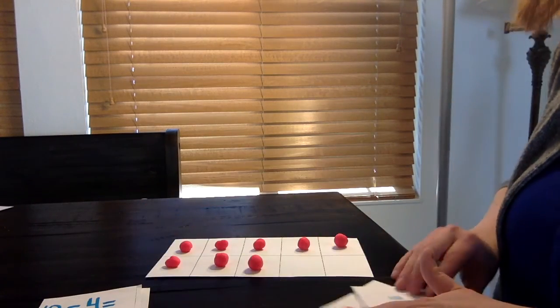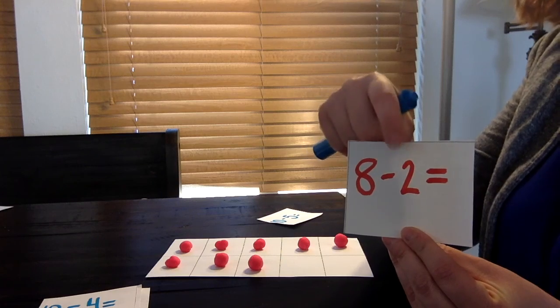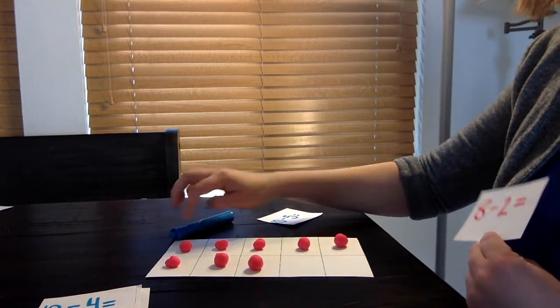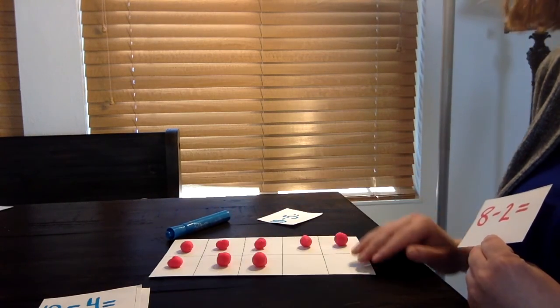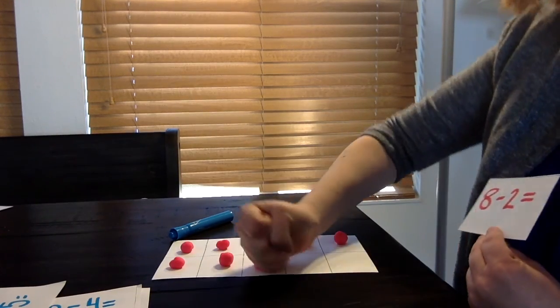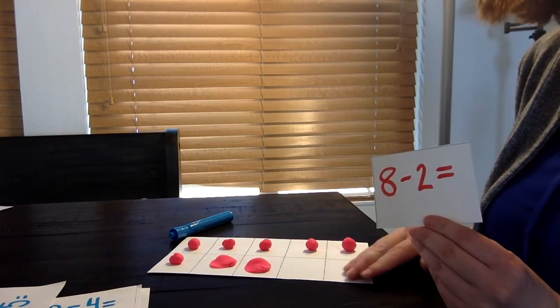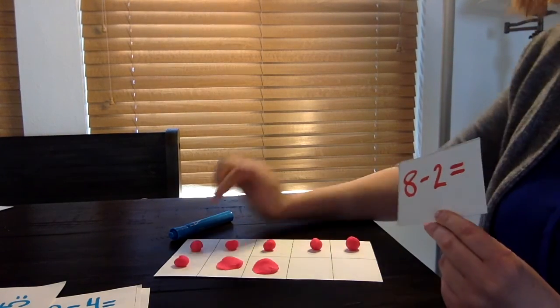So for my subtraction sentence, I'm going to start with this one here. So it says eight take away two. So I start with eight. I have my eight balls in my tens frame all ready to go. And I'm going to take away two. So what I'm going to do is kind of fun. I'm going to smash it. So I smashed two. And I want to see how many I'm left with. How many are not smashed?